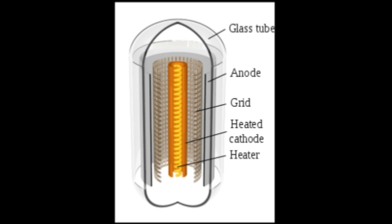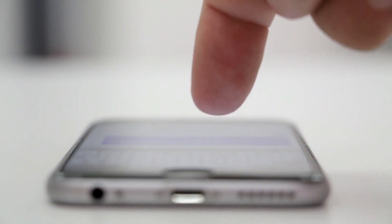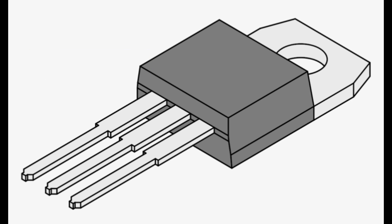The Triode is an electronic amplifying vacuum tube. This is the first practical electronic amplifier. The vacuum tube is an ancestor of the Triode. It was used in consumer electronics, and the original circuit placed Triodes in place within the circuit.